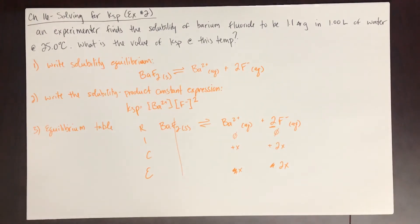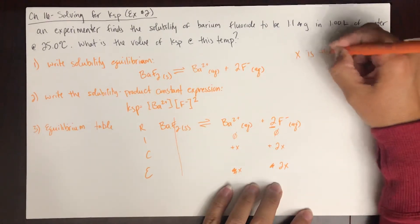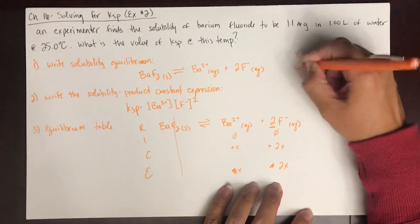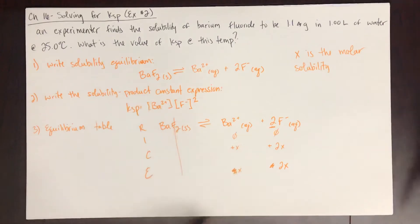So now when we write the equilibrium expression, we have to take this into account. So what X is, X is the molar solubility, because it's the amount that broke apart. So we're not given the molar solubility. We are given just the regular solubility,